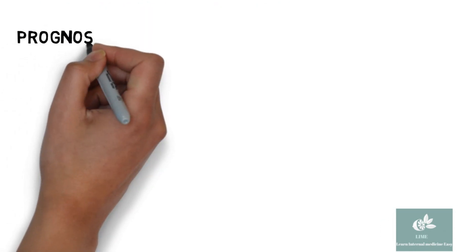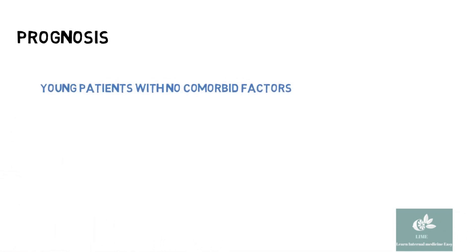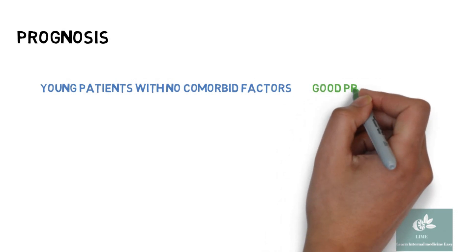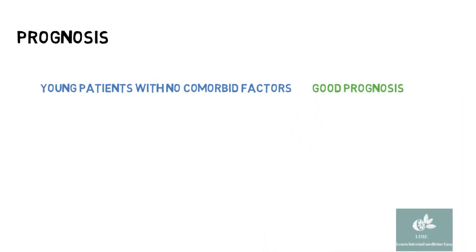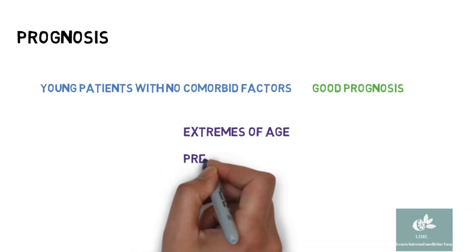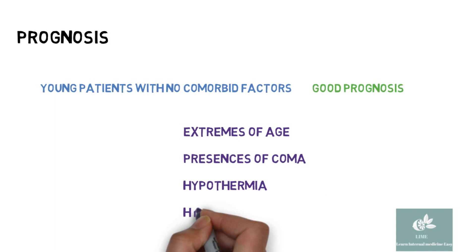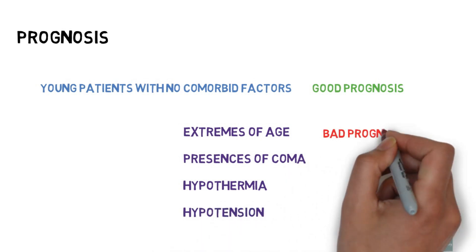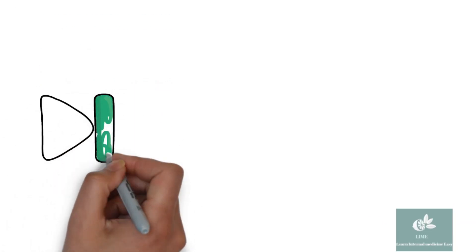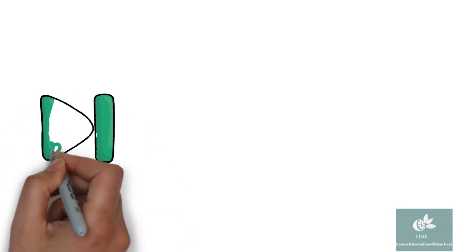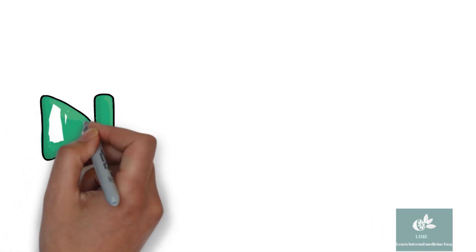Prognosis: in young patients with no comorbidities, the prognosis is usually good. At extremes of age, presence of coma, hypothermia, and hypotension indicate a very bad prognosis. Our next topic for discussion is hyperosmolar hyperglycemic state.